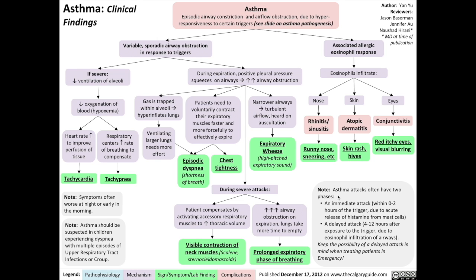Note that asthma attacks, as described in our pathogenesis video, have two phases: an immediate attack phase within 0 to 2 hours after exposure to the trigger due to the acute release of histamine from mast cells, as well as a delayed attack phase 4 to 12 hours after exposure to the trigger due to eosinophil infiltration of the airways. Keep the possibility of a delayed attack in mind when treating patients in the emergency room. Note also that symptoms often worsen at night or early in the morning, and that asthma should be suspected in children experiencing dyspnea with multiple episodes of upper respiratory tract infections or croup.